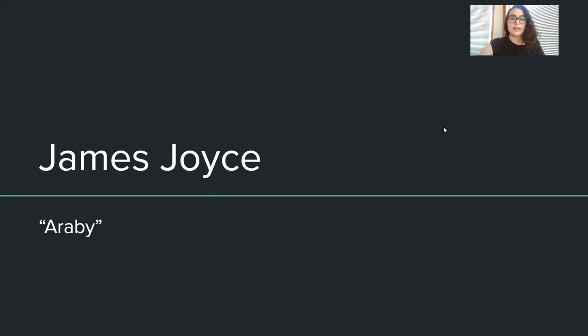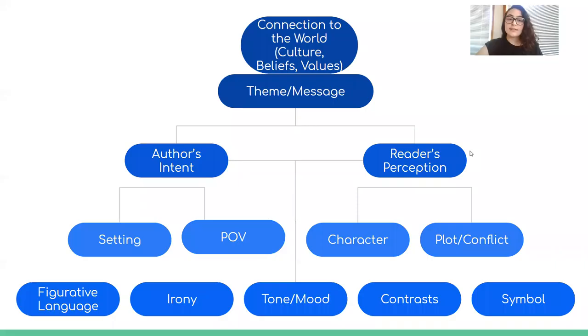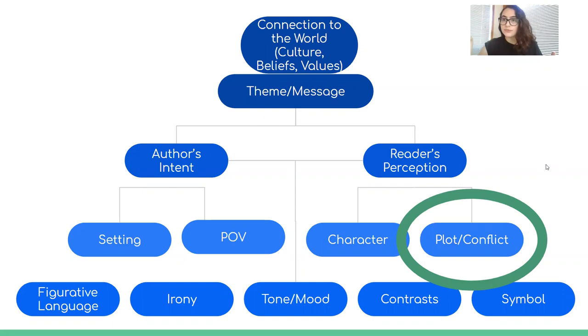Hello again. Welcome to another literary analysis lesson about a short story by James Joyce called Araby. Last time when we left off, we were talking about point of view. So today we're going to be talking about plot and conflict.